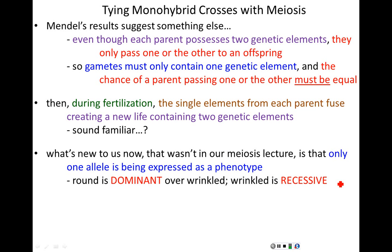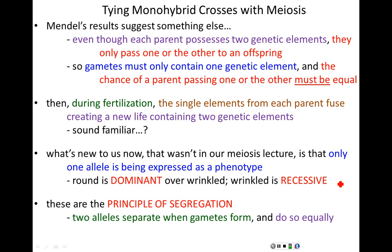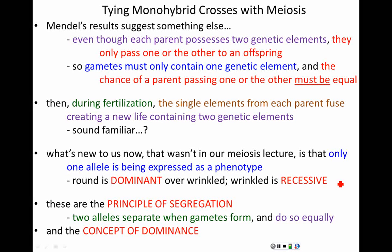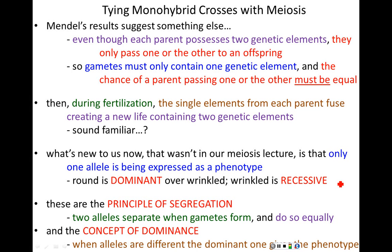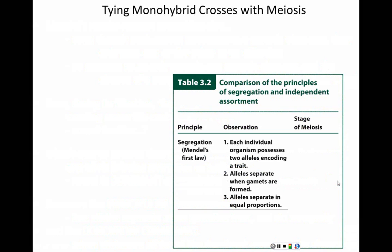What's new to us now in this lecture that wasn't in the meiosis lecture is that only one allele is being expressed as a phenotype. We never talked about the expression of genes in meiosis. Now we know that there's dominance — oftentimes one of those alleles will mask and overtake the other. Round is dominant over wrinkled. The term we use for the masked traits, the masked alleles, is recessive. What we've just described is the principle of segregation: two alleles separate when gametes form in anaphase, they do so equally with a 50-50 probability, and when you have two alleles of different types, one is dominant over the other, and the dominant allele is the expressed trait.